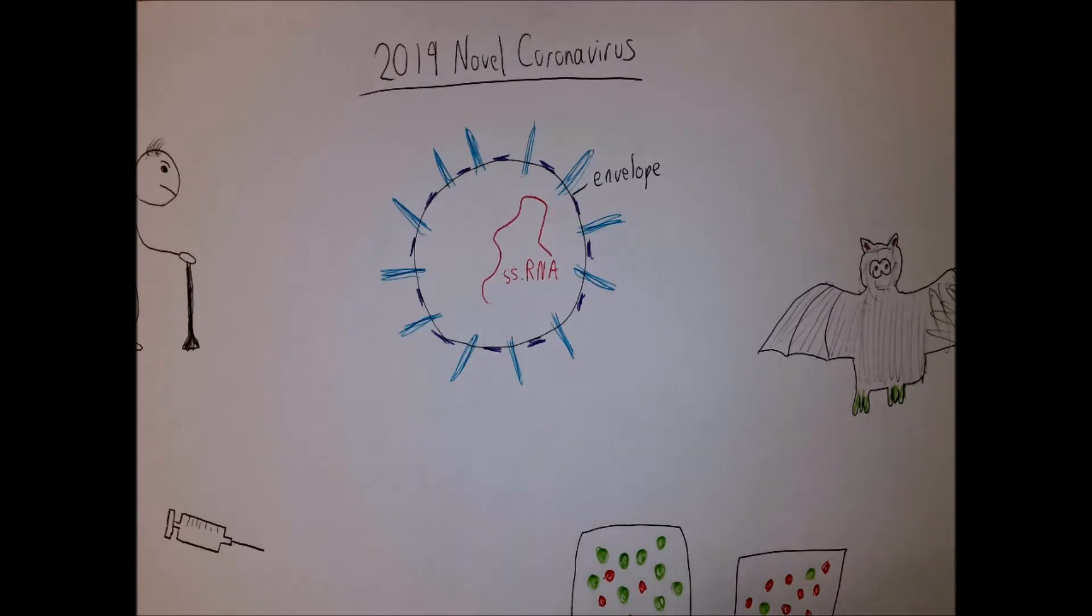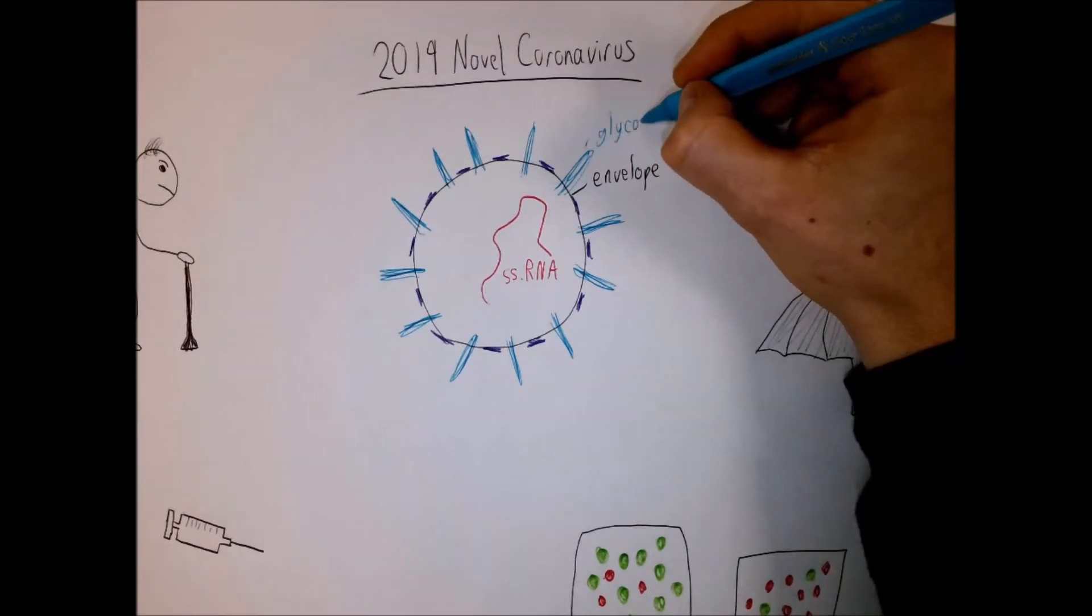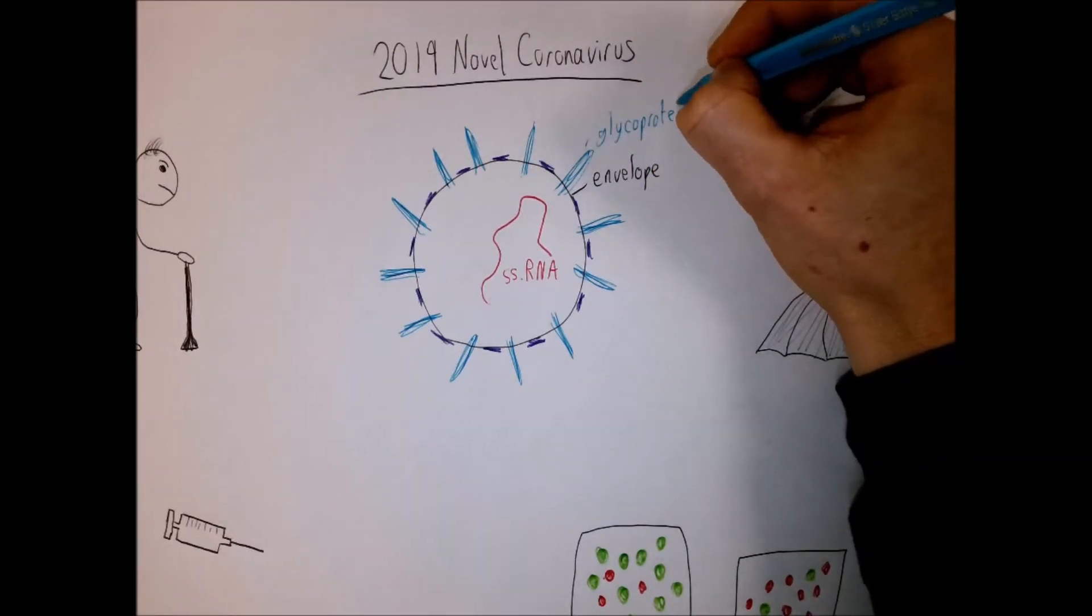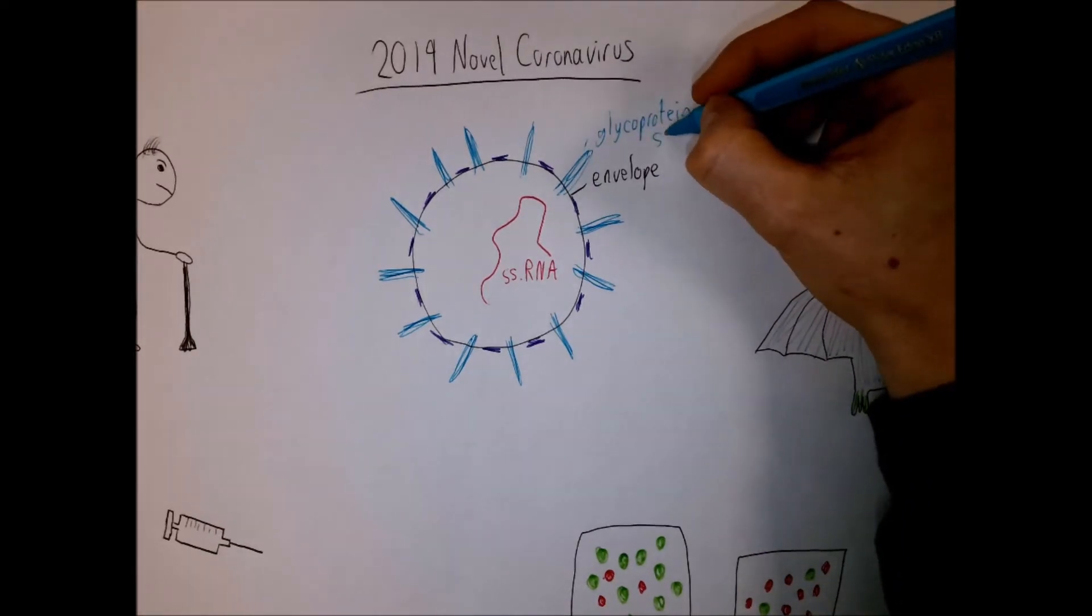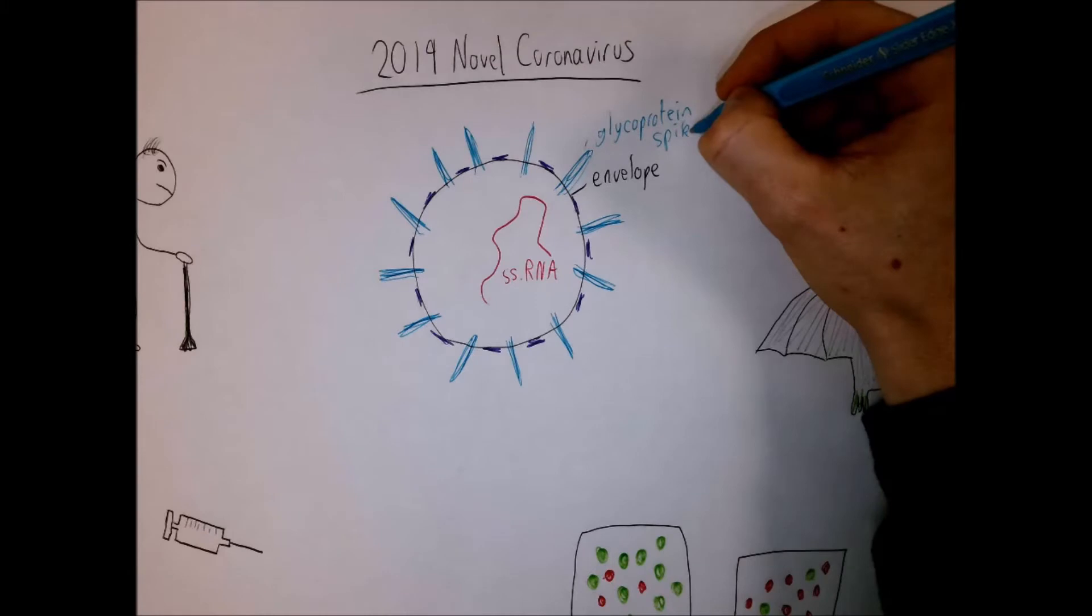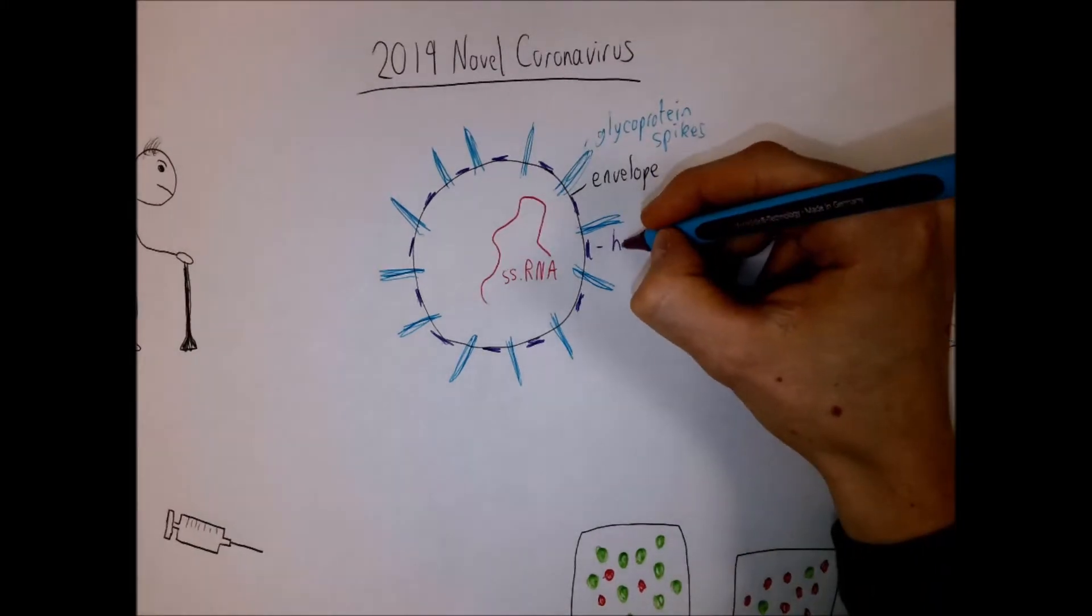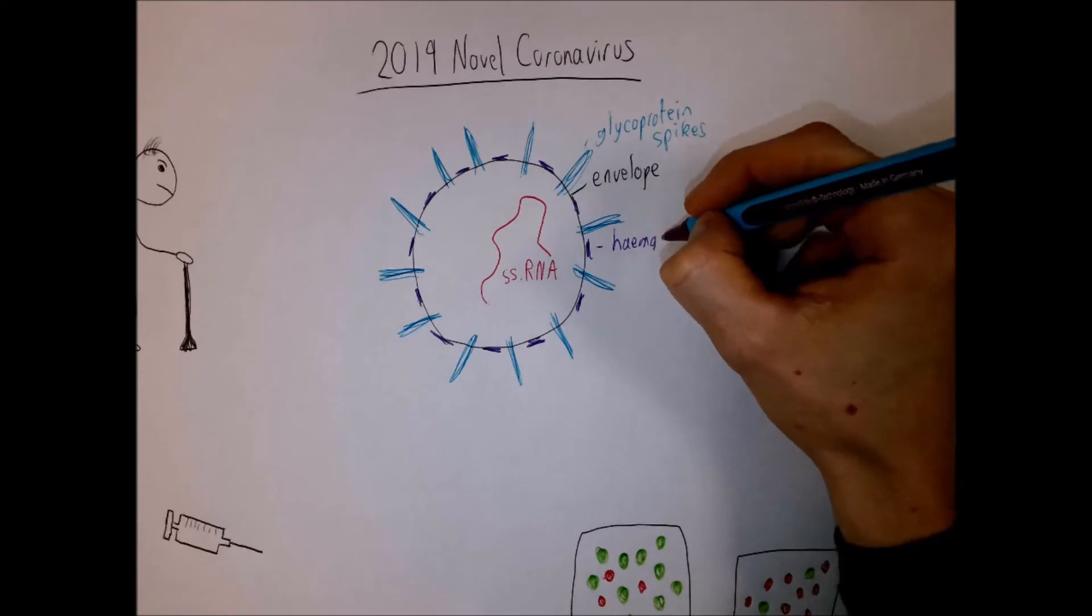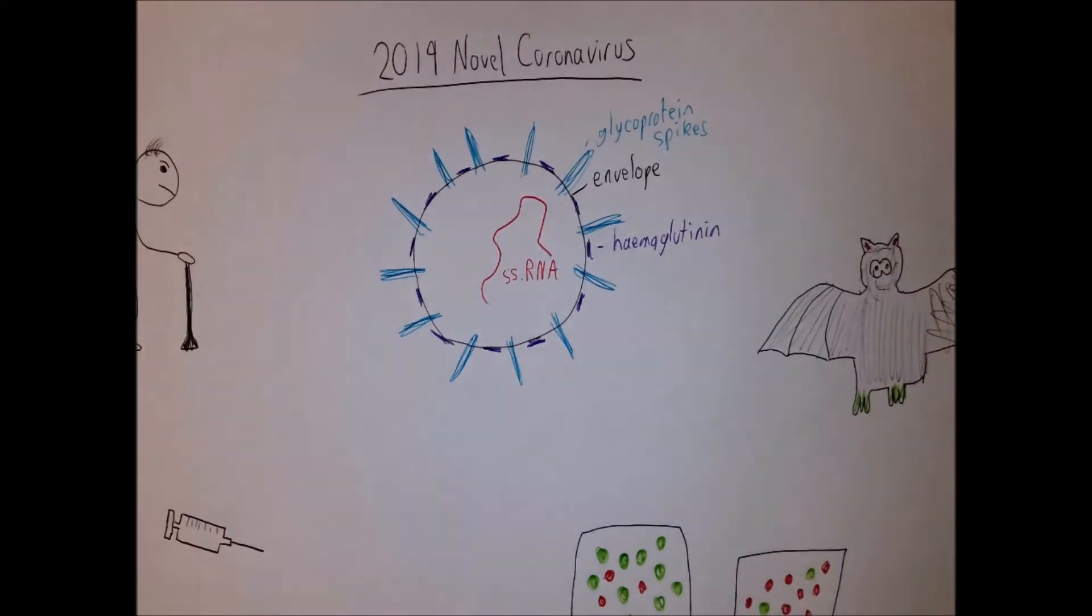Coming out of the envelope, we have a couple of different things. You've got some glycoprotein spikes. So these are a molecule which is a combination of carbohydrates and protein. You've also got a particular protein, which lots of viruses have, which is called hemagglutinin. So what this does is it allows binding of the virus with human cells. So when it's infecting people, the hemagglutinin is particularly important.